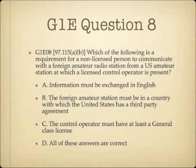Question 8. Which of the following is a requirement for a non-licensed person to communicate with a foreign amateur radio station from a US amateur station at which a licensed control operator is present? A, information must be exchanged in English; B, the foreign amateur station must be in a country with which the United States has a third party agreement; C, the control operator must have at least a General class license; or D, all of these answers are correct.